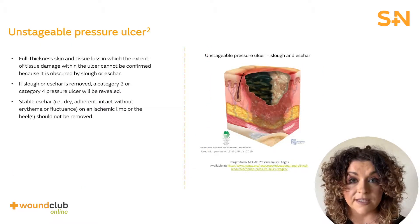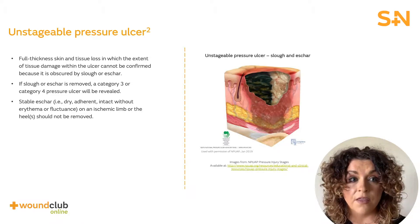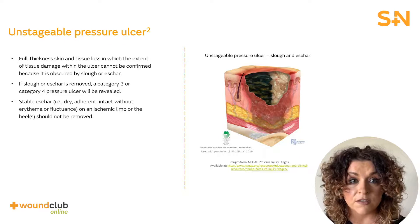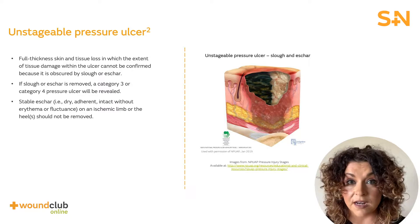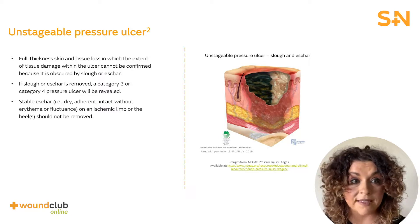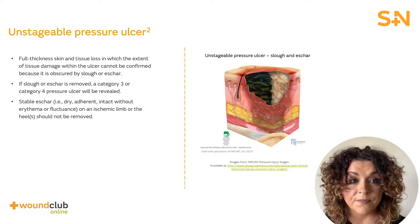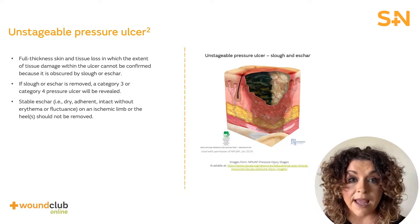As mentioned previously, unstageable pressure ulcers are those with full thickness skin and tissue loss in which the extent of tissue damage cannot be fully assessed as the presence of slough or eschar is covering the extent of tissue damage. Once the slough and eschar have been removed, the pressure ulcer can and should be classified correctly.